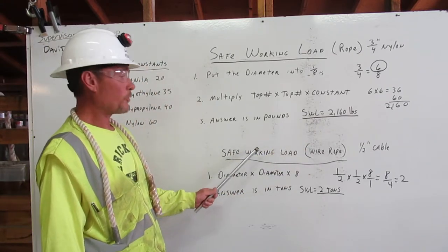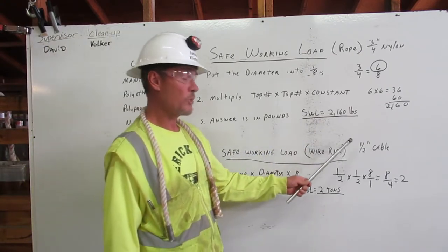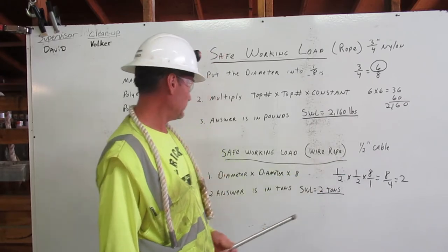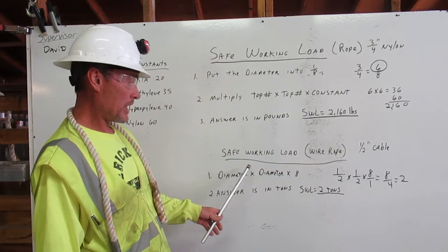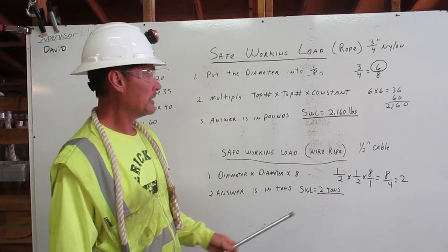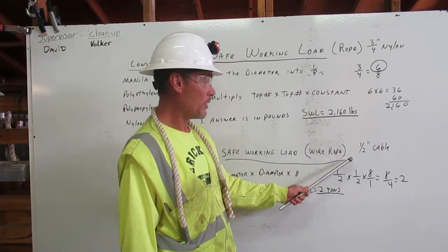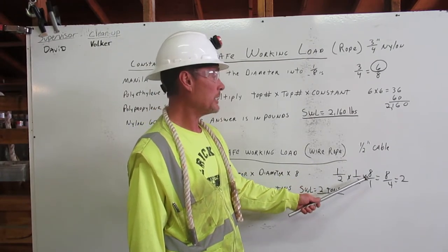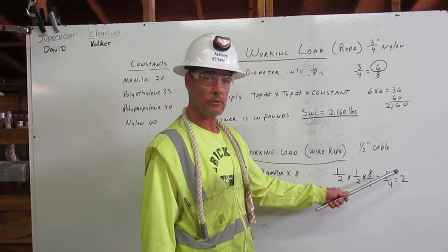The safe working load for wire rope: I'm going to use one-half inch cable for an example. We take the diameter times the diameter times eight. One-half inch cable is one-half by one-half by eight over one, equals eight over four, equals two.